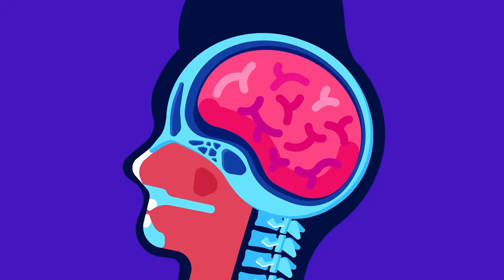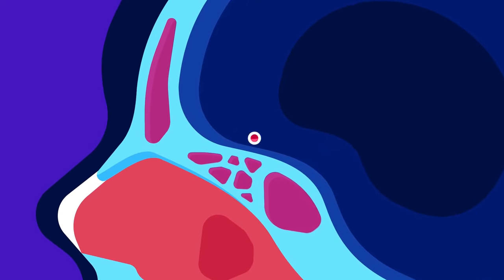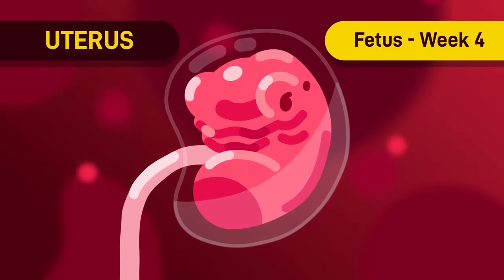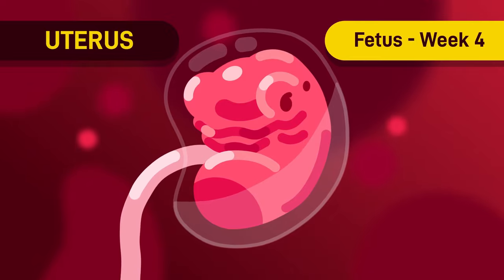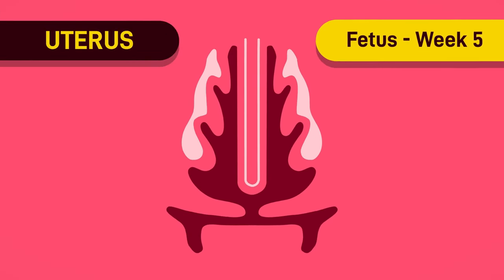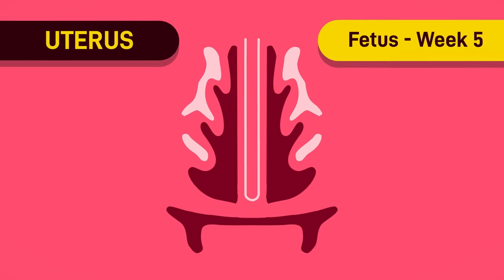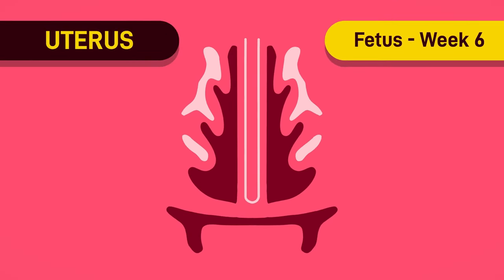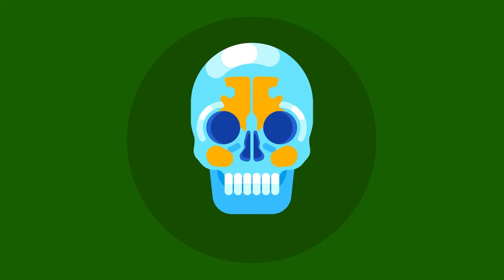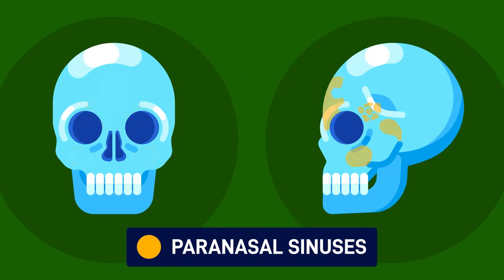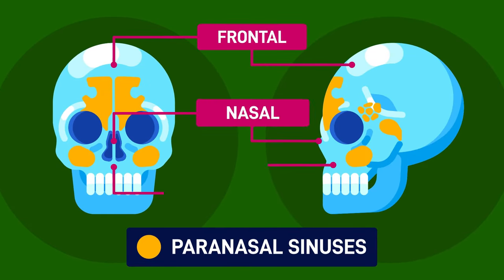We also have some more empty spaces located in the centre part of our skulls. Starting from our time inside the uterus, the nasal cavity eroded the surrounding bones in our skulls and formed the paranasal sinuses — the air-filled spaces that lie within the facial bones.